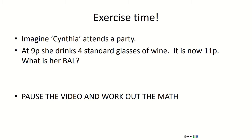Now here's an exercise for you. Imagine another friend, Cynthia, attending a party. At 9 p.m. she drinks four standard glasses of wine — all consumed at 9 p.m. exactly. It is now 11 p.m. What is her blood alcohol level? First calculate her BAL at 9 p.m., then account for the two hours that have passed. Pause the video, work out the math, and the next slide will show you the answer.